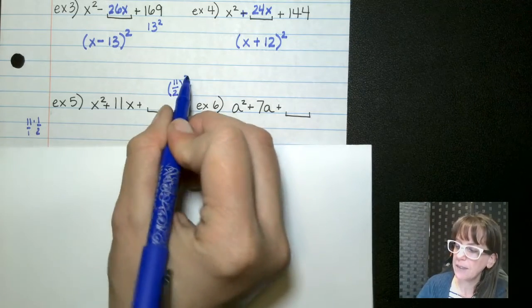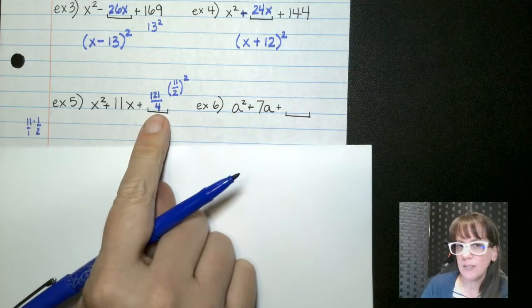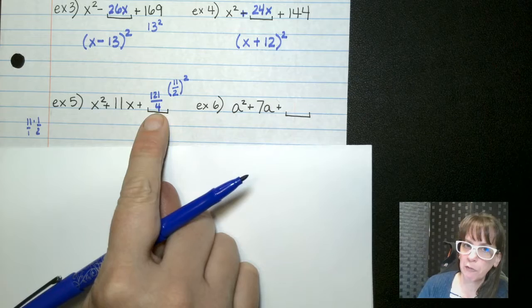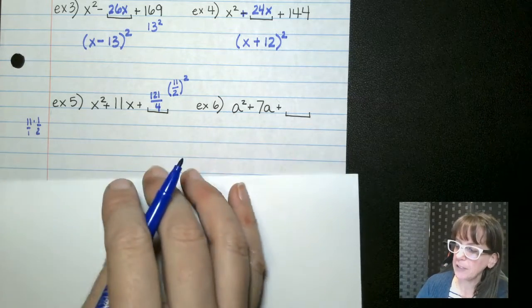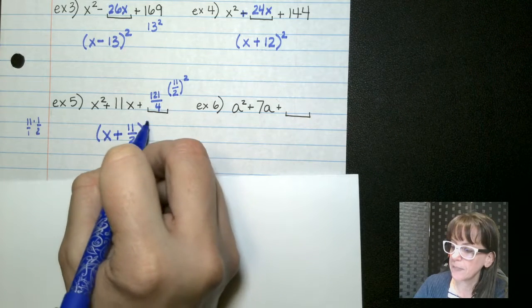Now, that 11 halves squared would be 121 over four. So our constant here at the end would need to be 121 over four. But if we were to factor that, it would be x plus 11 halves squared, like this.